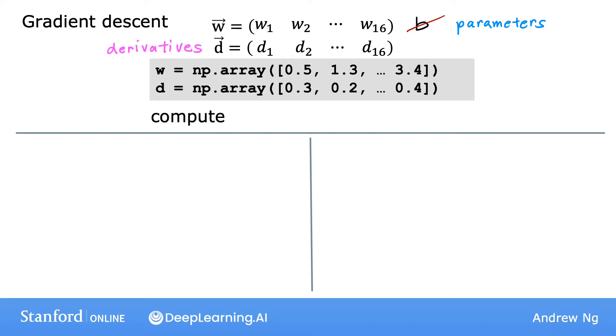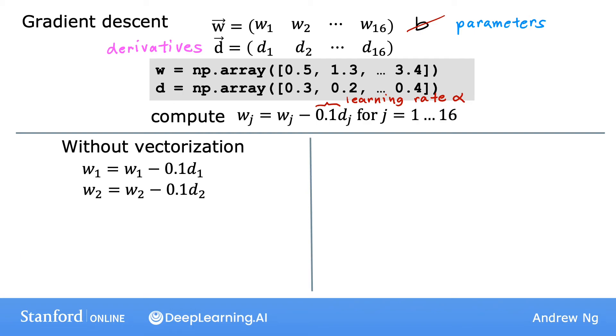Now, you want to compute an update for each of these 16 parameters. So Wj is updated to Wj minus the learning rate, say 0.1 times Dj. In code, without vectorization, you would be doing something like this. Update W1 to be W1 minus the learning rate, 0.1 times D1. Next, update W2 similarly, W1 through W2, and so on through W16, updated as W16 minus 0.1 times D16.